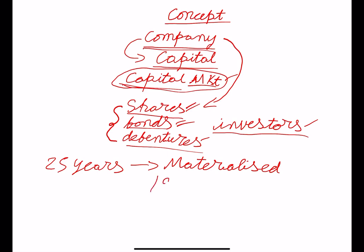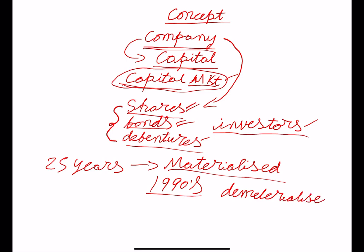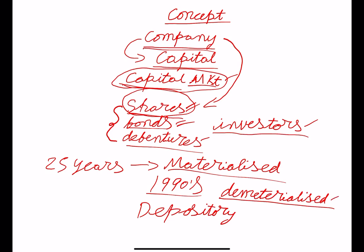After the 1990s, the materialized shares, debentures, and bonds were dematerialized. Dematerialized means non-physical. These dematerialized shares, bonds, or debentures should be held by a responsible institution — that is called a depository. When you buy a share now, which is totally dematerialized, investors will not keep it with them. It should be held by an institution called a depository. This is the concept.